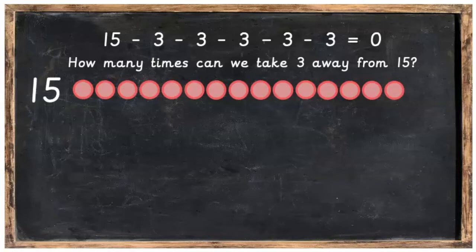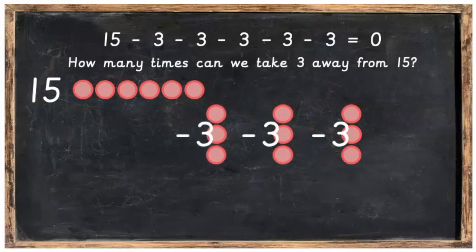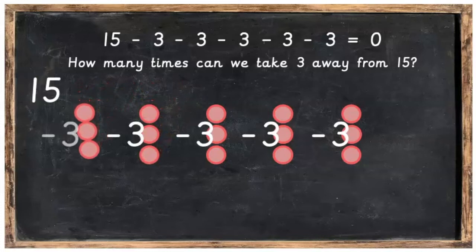So if I got my counters out, it would look a little bit like this. I take away 3, then I take another 3 away and then another 3, another 3 and then finally my last 3 until I've got zero.